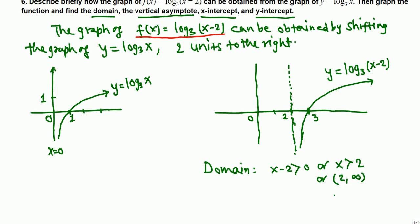For the vertical asymptote: x = 0 is the vertical asymptote for the base function, but since it shifted 2 units, the vertical asymptote is x = 2. The graph comes closer and closer to this vertical line.